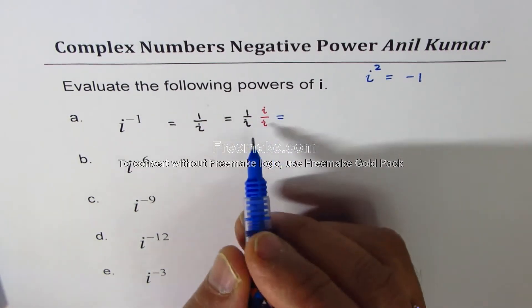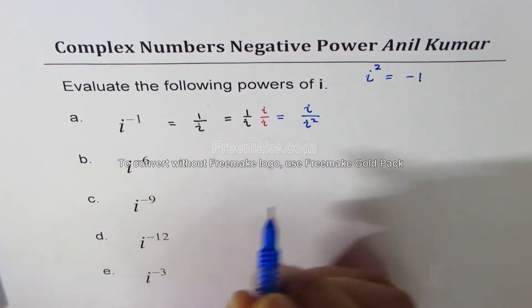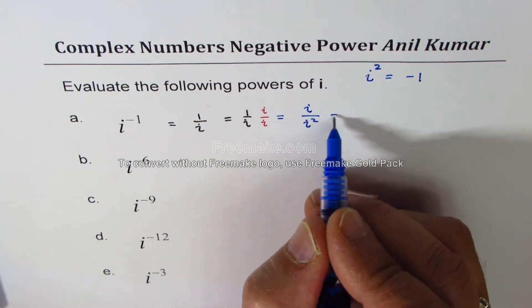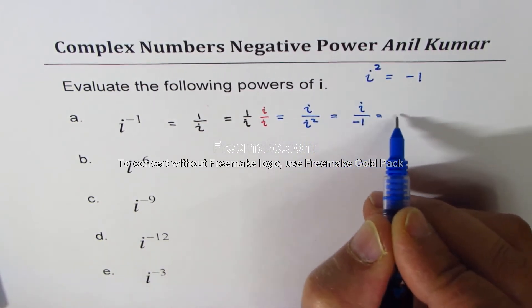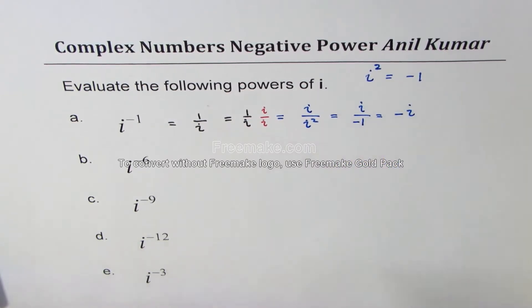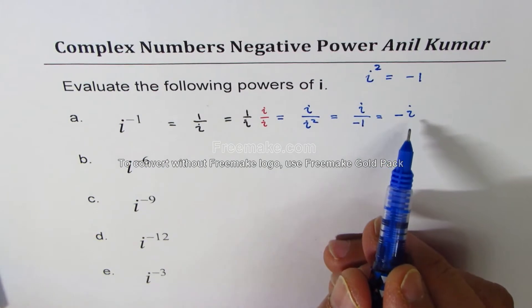So if you do that, what do you get? i over i square, right? Now i over i square means i over i square is minus 1, and that gives you minus i as the result. So i to the power of minus 1 is minus i.